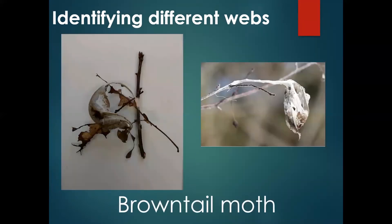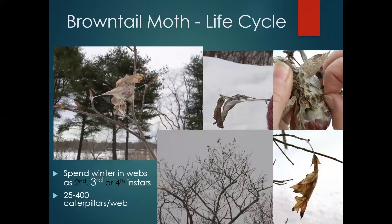Now to browntail — the nests are quite variable, but there are always a few things they have in common. They're never going to be bigger than the size of the palm of your hand, and they will be comprised of fresh, bright white silk, particularly where the leaf meets the branch here. They're almost always going to be on the very tips of the branch. Sometimes it can be a single leaf silked together, but more typically it will be about 50/50 leaf and silk material.